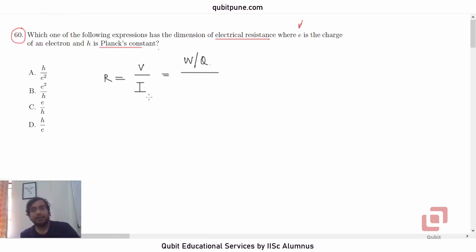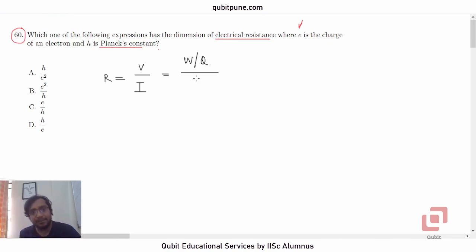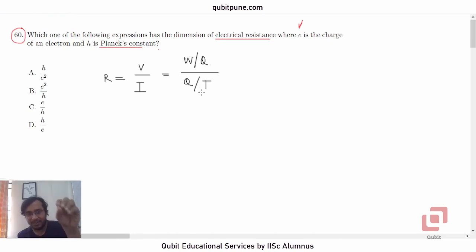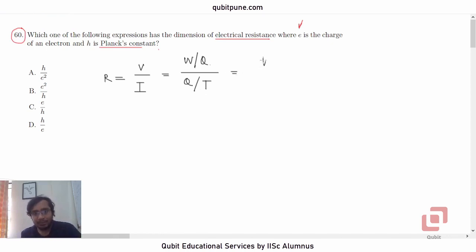And what is electric current? Electric current is essentially the rate of flow of charges per unit time, so it will be Q by T. I am deliberately writing here capital T — do not misinterpret that as temperature; take it as time, because here we are talking about dimensions. Now, the Q in the denominator of V, let us shift it here, so that will become Q squared. And this T which is in the denominator of the denominator, let us send it to the numerator.